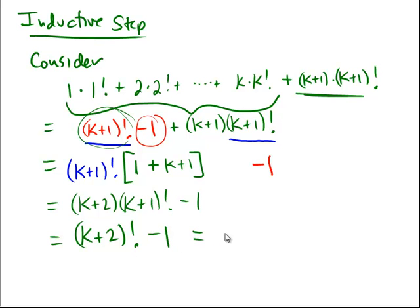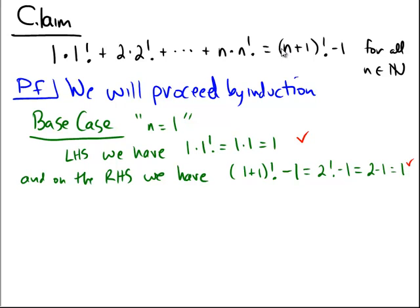And just for completeness here, notice that this is the same as the statement that we had, k plus 1 plus 1 factorial minus 1. So in other words, it's just like the initial statement all the way at the beginning, but with the n replaced with a k plus 1. So therefore, we get to conclude.